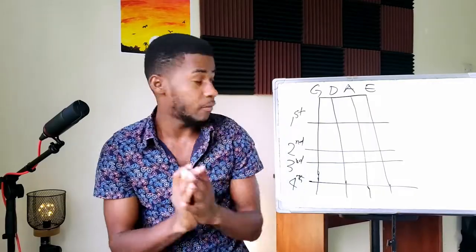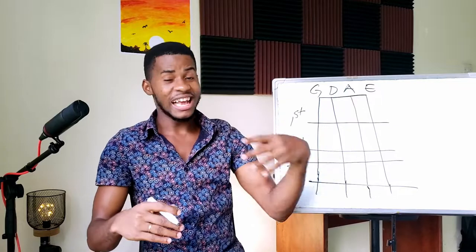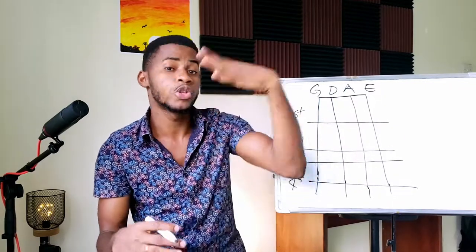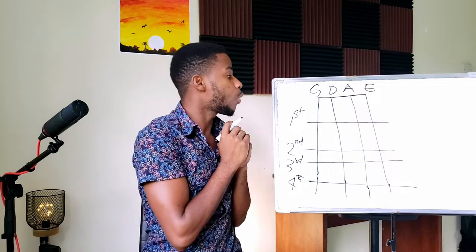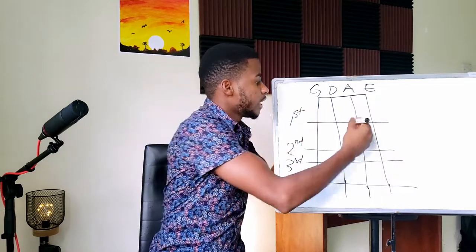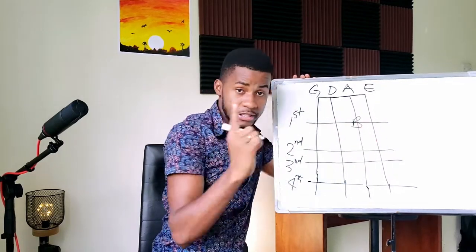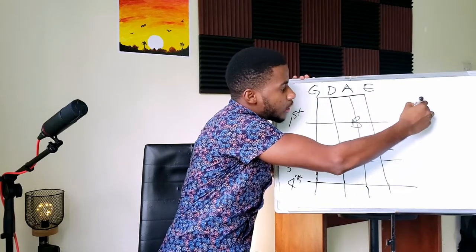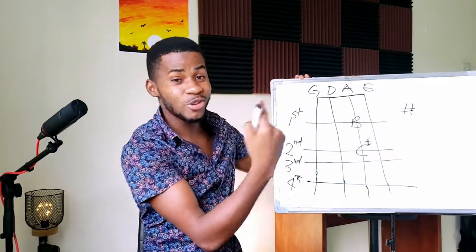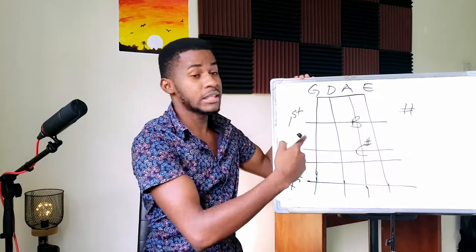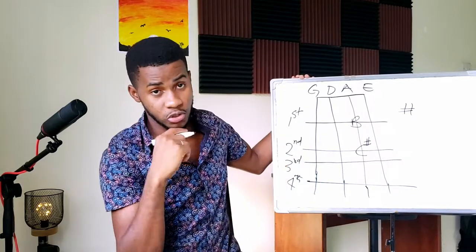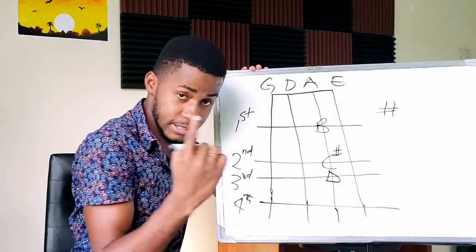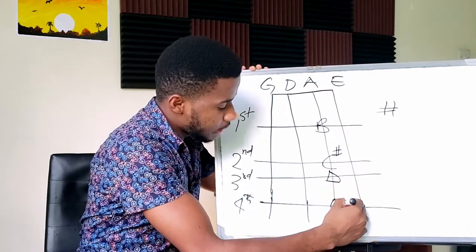Remember how music alphabets go: after A we have B, then C, D, E, F, and G, and then it goes back to A again. So after the open A string, first finger on A is B, second finger is C sharp. This number sign in music is called the sharp sign, so whenever you see that in music just know that it's a sharp.